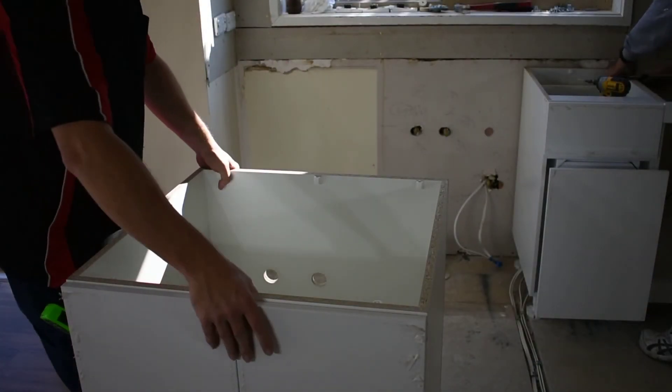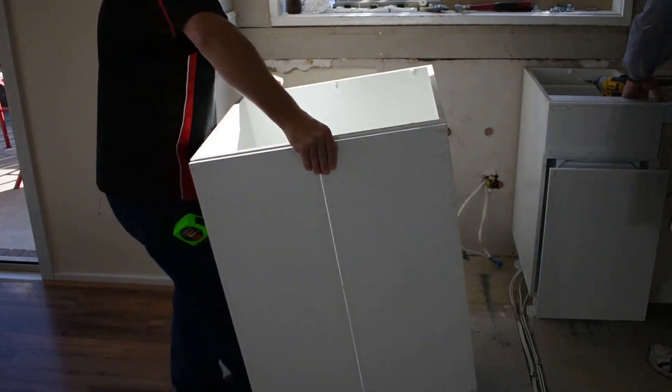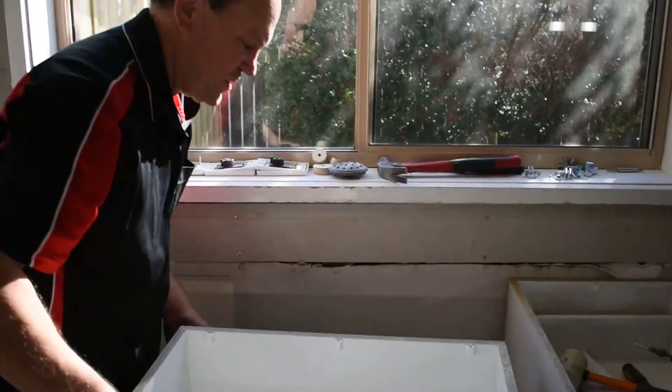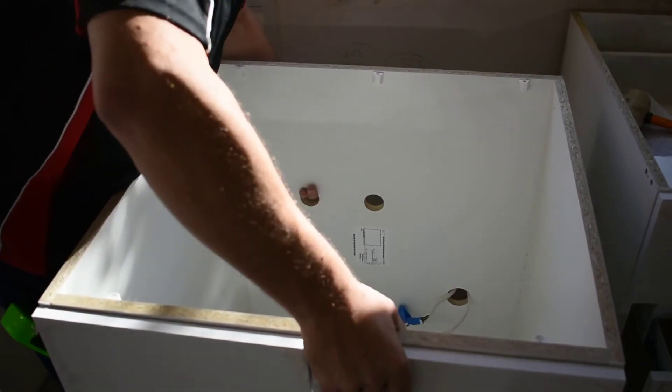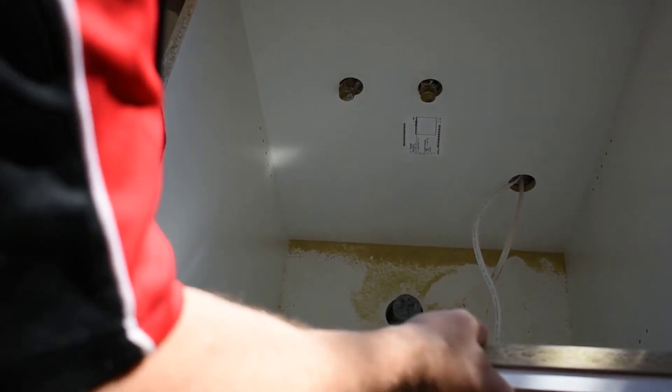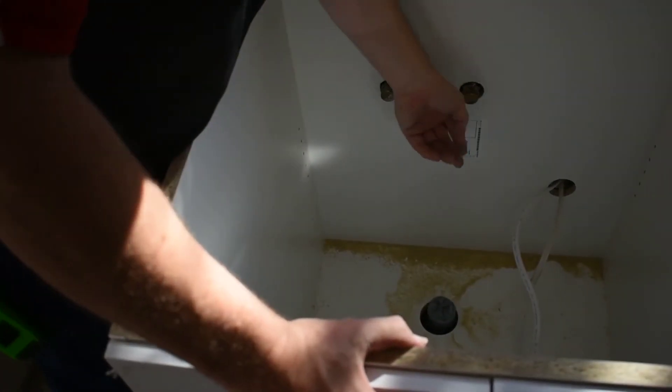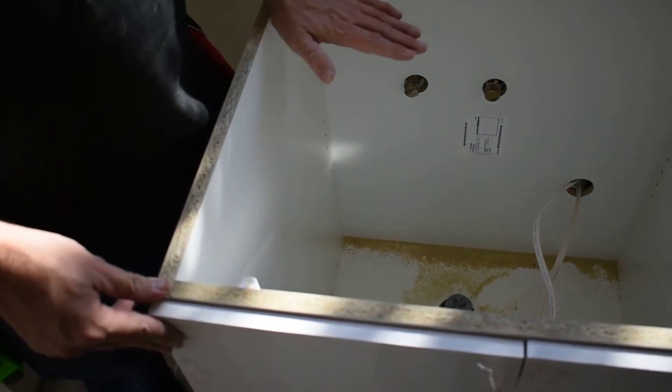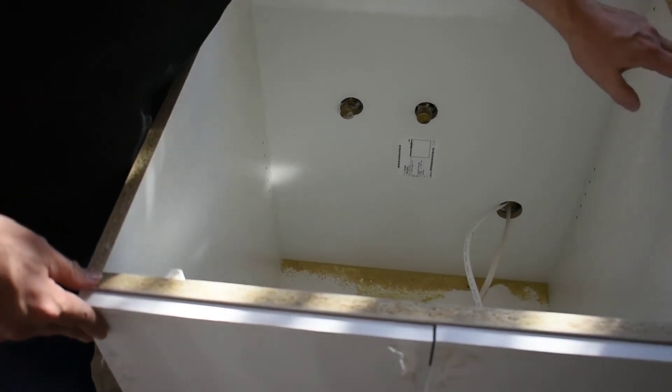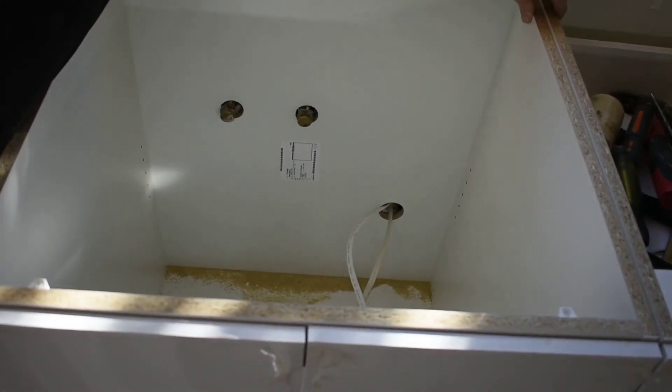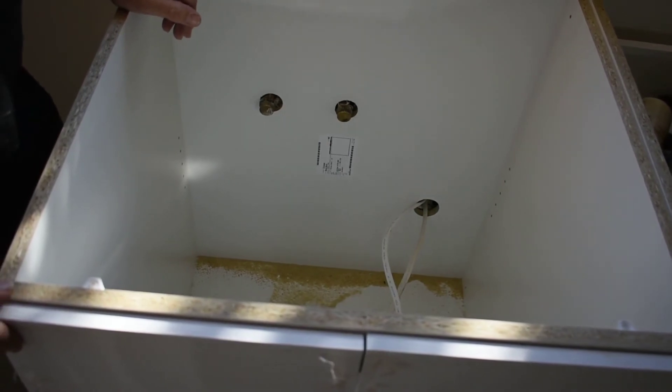All right, so now we can just simply put this cabinet in place, pop the dishwasher holes first. Okay, that's our cabinet in. Now all we need to do is level it up with this cabinet here, clamp it off and then screw fix it together.